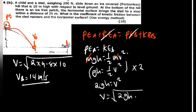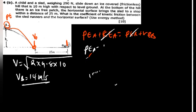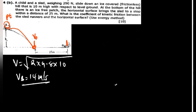Now we want to find the coefficient of kinetic friction. From point B to point C, the only force present is the friction force. When only friction acts, we can use the work-energy theorem: the work done by friction equals the change in kinetic energy.